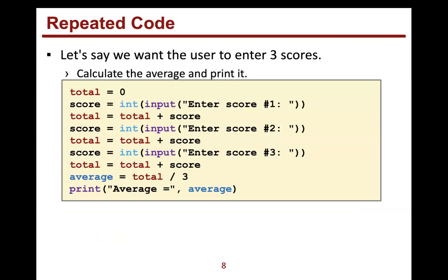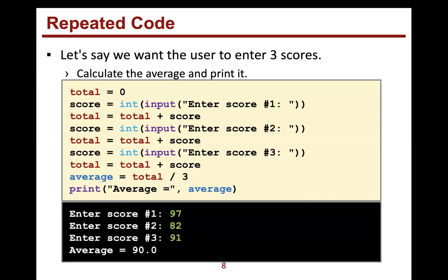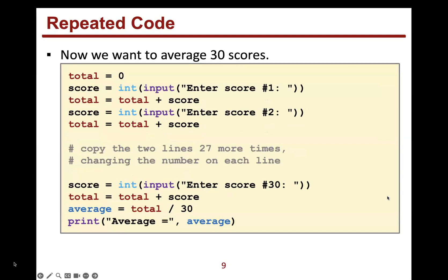This allows us to do repeated code. For example, let's say we want the user to enter three scores, calculate the average, and print it. With three scores we could just write: total = 0, get score from user, add it to total, get another score, add it to total, get another score, add it to total, then divide total by three to get the average. But think about 30, 60, or 100 scores — that's a lot of lines you'd be copying and repeating, and that becomes our loop body.